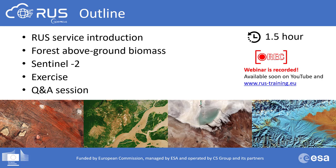The outline of this tutorial is as follows. I will first introduce the RUSS service and explain how you can access our virtual machines. Then I will move to the presentation of the problem of today's webinar: forest above-ground biomass. Then I will cover the characteristics of Sentinel-2 satellite and its products. Finally I will go to the hands-on case study. At the end there will be dedicated time for Q&A — you can write your questions in the question tab and I will answer them later.